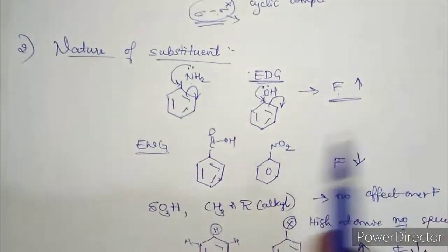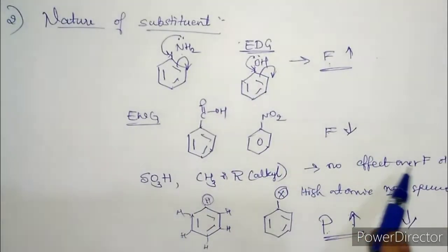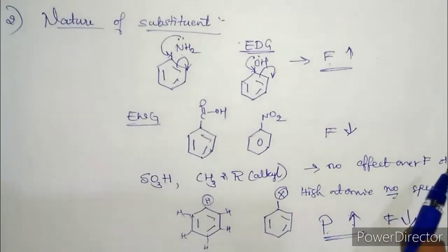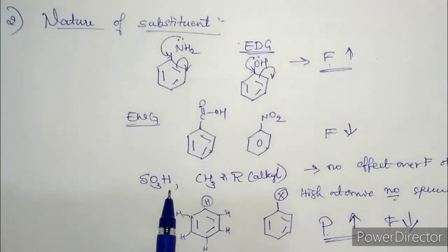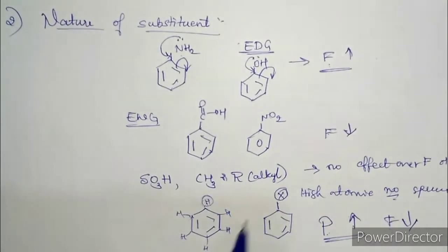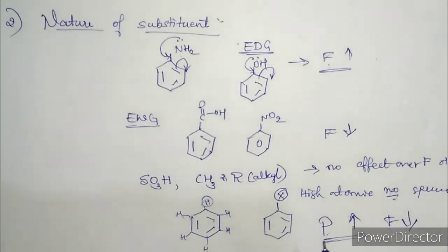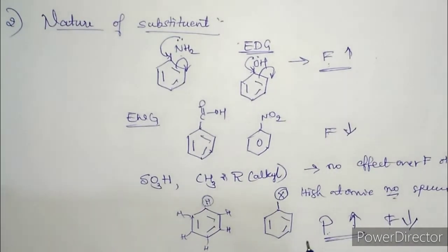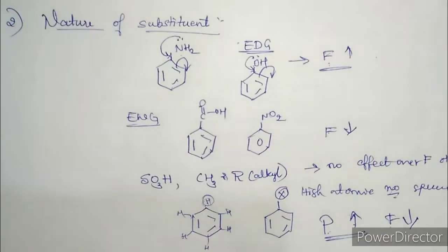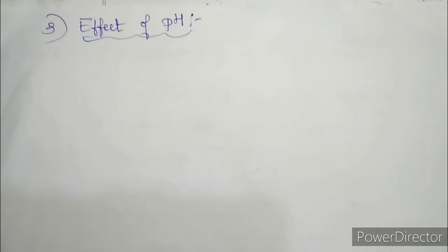To summarize factor two: if you have electron donating groups, fluorescence increases; electron withdrawing groups, fluorescence decreases; sulfonic acid or alkyl groups have no effect over fluorescence or phosphorescence. If you replace hydrogen or a lower atomic number species by a higher atomic number species, phosphorescence increases but fluorescence reduces.